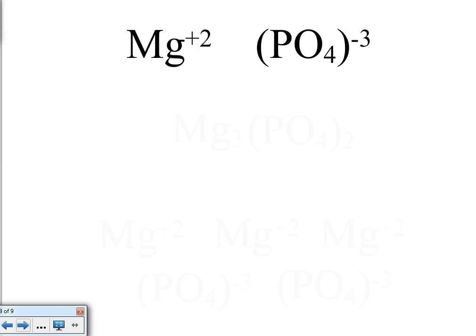If you have a polyatomic ion, the process is still the same, but you have to use parentheses to show that the polyatomic ion stays intact. Here we have the magnesium ion, which is a plus 2, and the phosphate ion, which is a minus 3. To make this neutral, the shorthand method is to take the charge on the magnesium ion, which is a 2 — that will become the subscript of the phosphate. And the charge on the phosphate will become the subscript on the magnesium.